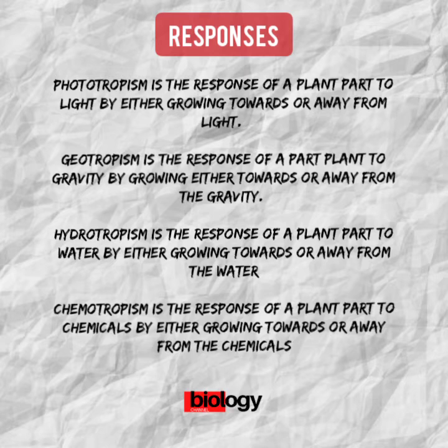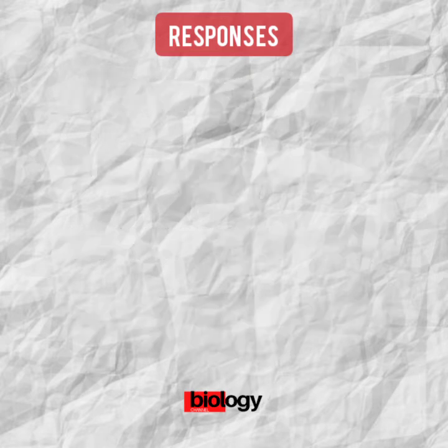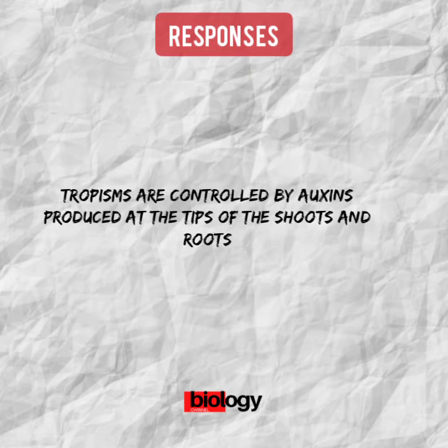Positive geotropism in roots makes it possible for roots to grow towards water and nutrients in the ground for the plant to grow. Hydrotropism is the response of a plant part to water by growing towards or away from water. Growth towards water is called positive hydrotropism; growth away from water is called negative hydrotropism. Plant roots are generally positively hydrotropic, ensuring that roots absorb water for the plant to grow. Chemotropism is the response of a plant part to chemicals by growing towards or away from chemicals. Growth towards chemicals is called positive chemotropism; growth away is called negative chemotropism.